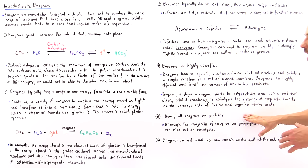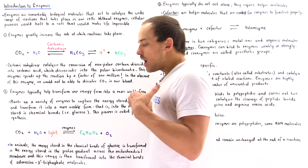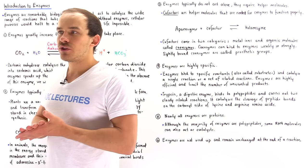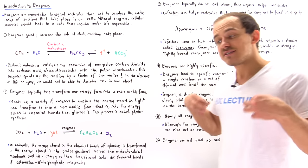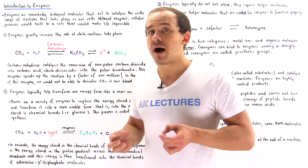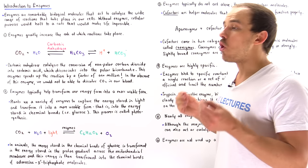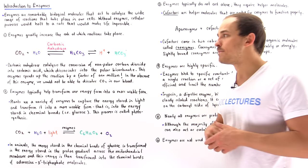Now number five, nearly all enzymes are proteins. So long ago we essentially thought that all enzymes were proteins, but now we know that some enzymes are actually RNA molecules. So certain RNA molecules also have the ability to catalyze reactions as we'll see eventually.